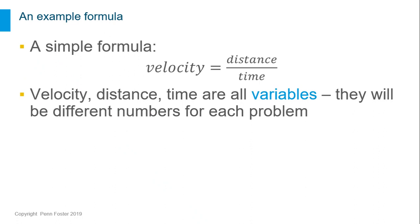Let's look at a very simple formula. Velocity equals distance divided by time. This tells us a pattern for finding velocity. The words in the formula are called variables because their value will be different in every problem. The numbers will be different, but the pattern doesn't change.